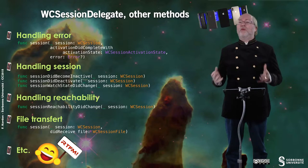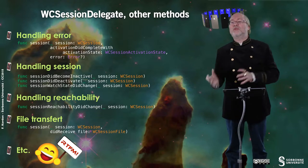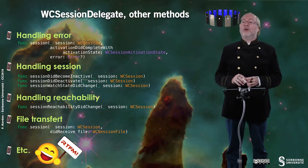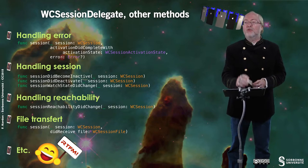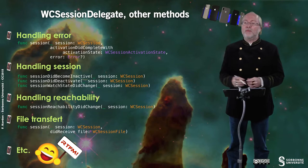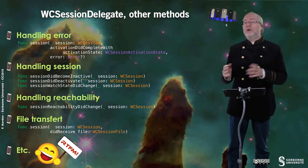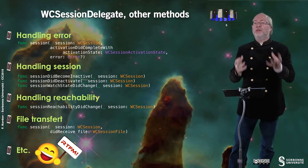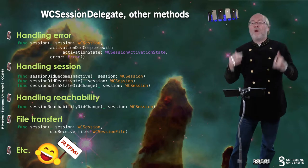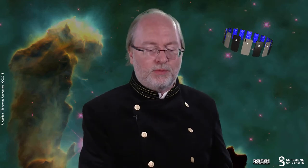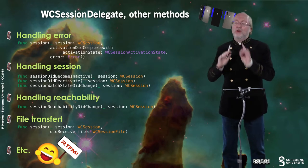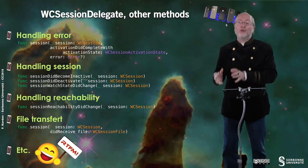WCSessionDelegate also offers other methods. First, to handle successful or unsuccessful completion of the session — if you get a non-nil error it means there is a problem. You can also handle session state changes: check if the session did become inactive, if it reactivated, or if the watch state changed. Finally, you can handle reachability — essentially whether the watch is on or off, or whether the application on the watch is running or not.